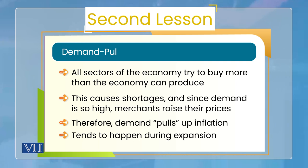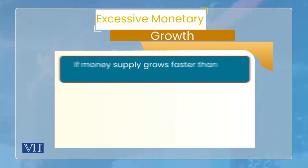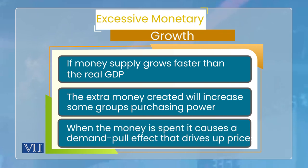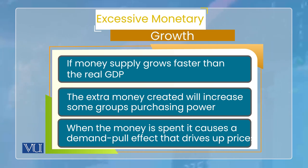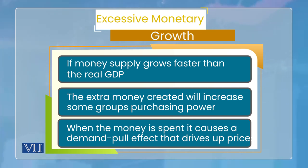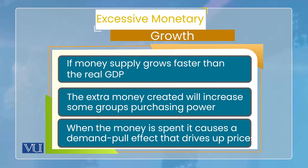اب ہم ان کے factors کی طرف جاتے ہیں. پہلا factor demand-pull inflation کا ہے excessive monetary growth. اگر money supply grow کرے لیکن اس سے زیادہ speed سے کرے جس speed سے GDP grow کر رہی ہے — تو اگر money کی growth real GDP کی growth rate سے زیادہ ہو جائے، تو نتیجہ یہ ہوگا کہ جو extra money system میں create ہو رہی ہے وہ مسئلہ بنے گی.